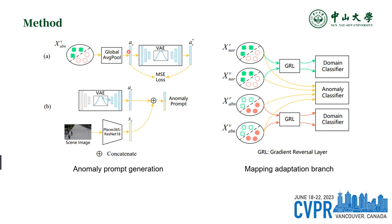In the real domain, we do not have an anomaly vector. So we train a variational autoencoder in the virtual domain and generate the anomaly vector from the latent space in the real domain. The variational autoencoder can generate an unbounded type of anomaly vector, enabling divergent mapping in the real domain. In addition, to make the anomaly prompt independent of the input scene, we use a ResNet pre-trained on the Places dataset to extract scene image features. The concatenation of the anomaly vector and scene vector forms the anomaly prompt.